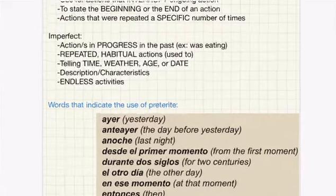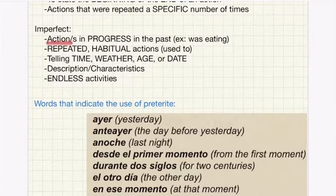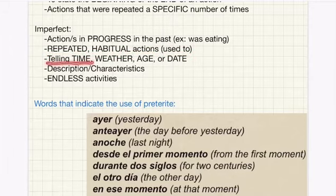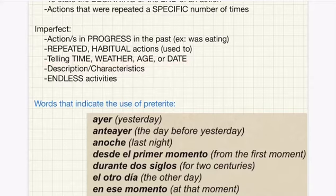Moving on to the imperfect tense, we're going to use it for actions in progress in the past — so an example would be 'was eating.' You're also going to use it for repeated habitual actions, so that's when you would say 'I used to do something.' And then you're also going to use it for telling time, describing the weather, describing your age or stating the date, for description and characteristics, and lastly for endless activities.